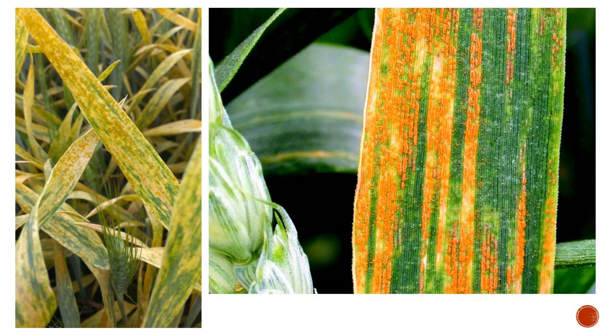As you can see in the picture, yellow rust or stripe rust takes its name from the appearance of yellow colored stripes produced parallel along the venations of each leaf blade.